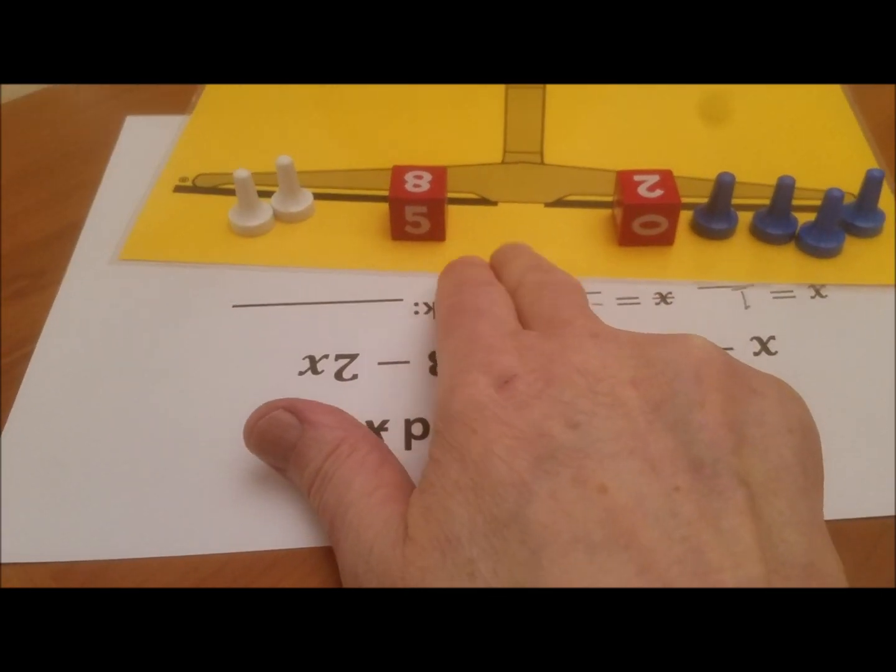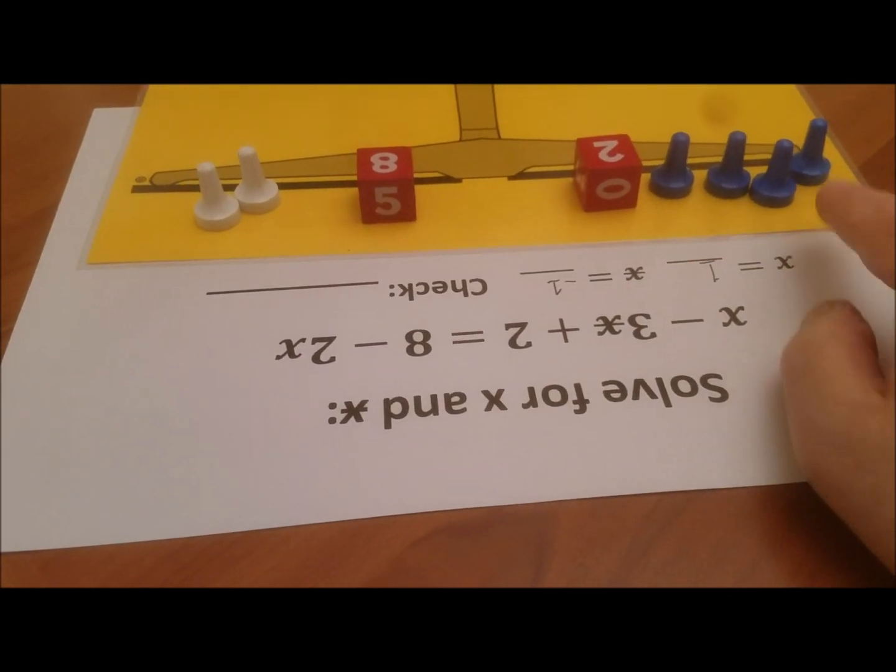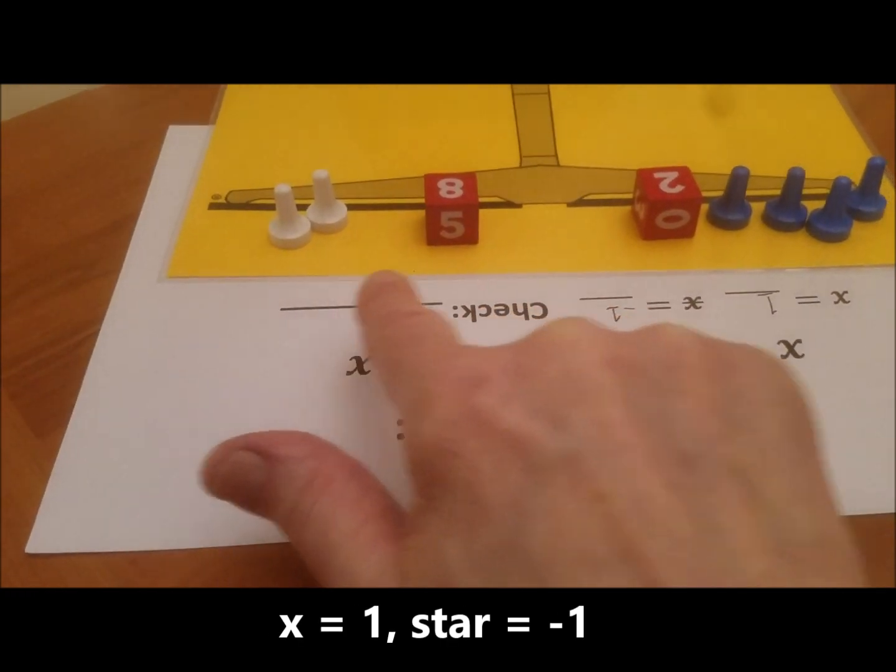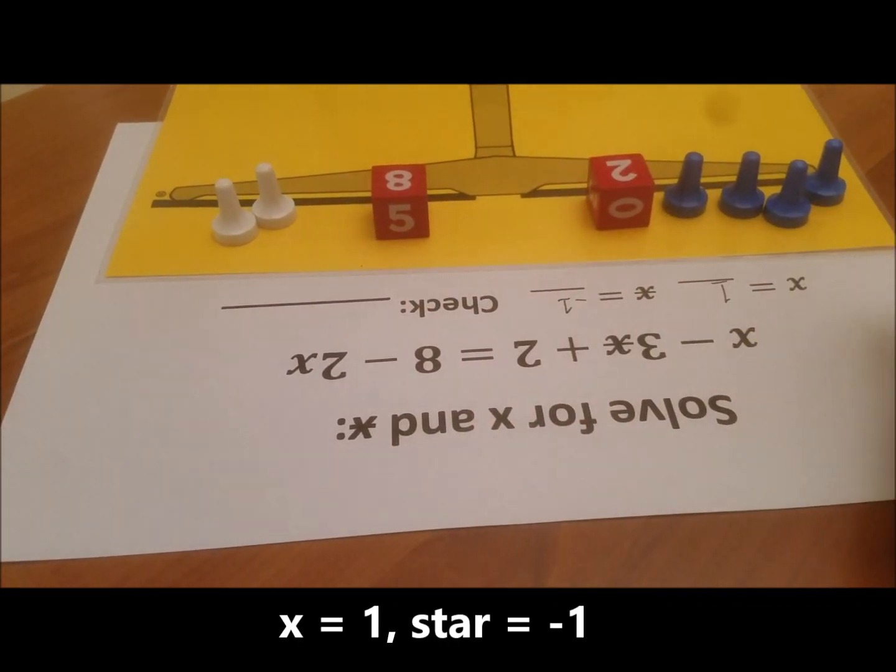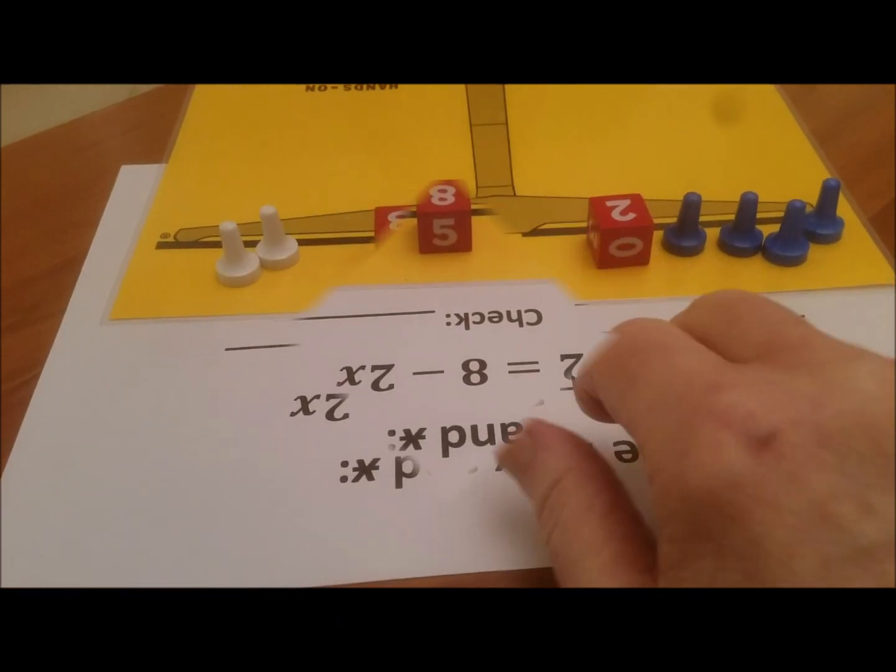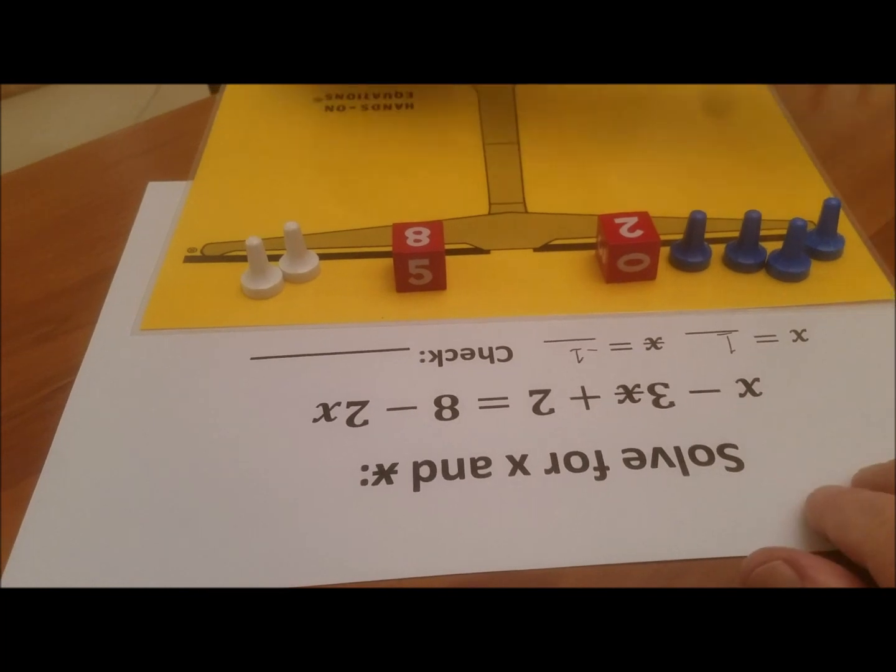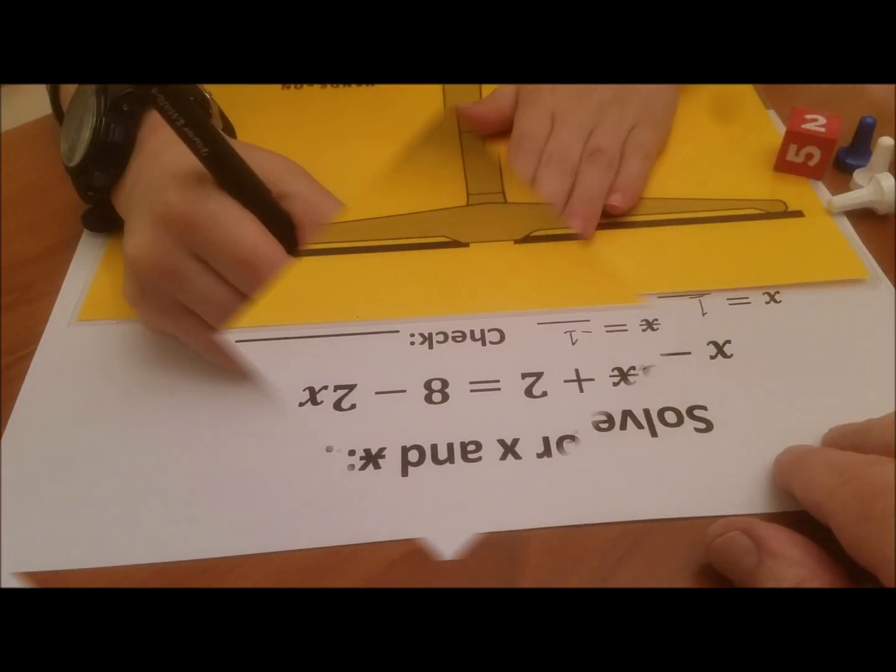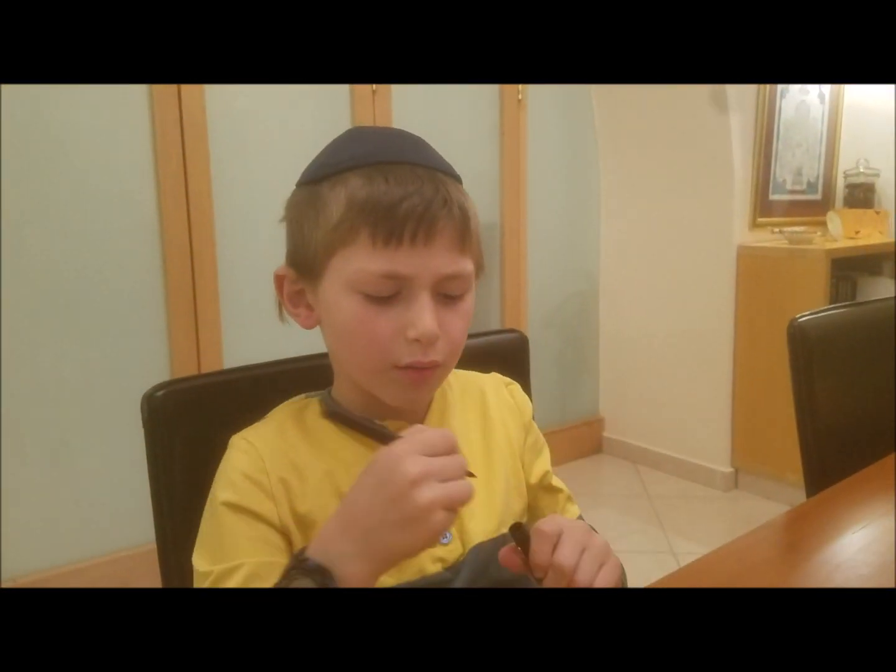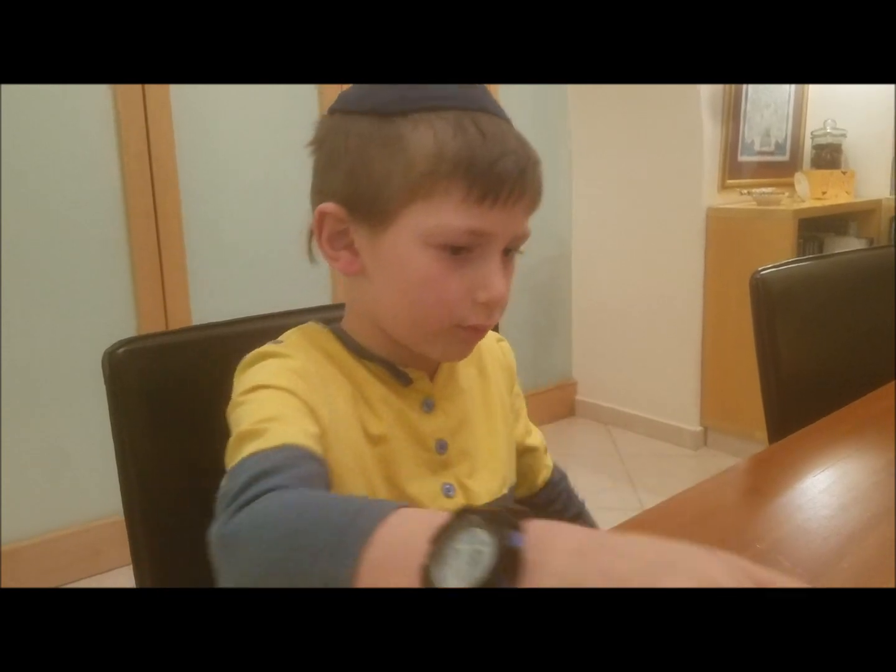Okay, so now let's do the check. We said that each X is equal to one and each star is a negative one. So how much is this side going to be worth and how much is this side going to be worth? Both sides are six. So for the check, please write six is equal to six. Good. And what grade are you in? Third grade. Okay, very nice.